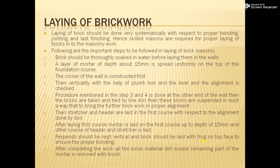The third step is: the corner of the wall is constructed first. When we are constructing the wall, the two corners of the walls are constructed properly first. Then with the help of a plumb bob and the line dhuri, we properly do the masonry work. For getting a proper alignment and verticality, we have to first build the corners of the wall, and then with the help of these corners as supports, we build the remaining part of the wall.